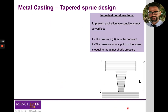Before we start solving the question, two important considerations. First, in order to prevent aspiration, we need to ensure that the flow rate is constant along the sprue from point 1 to point 2, and that the pressure at any point along the sprue is equal to the atmospheric pressure. We will use subscripts 1 and 2 for the top and the bottom of the sprue respectively.